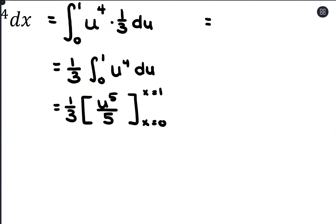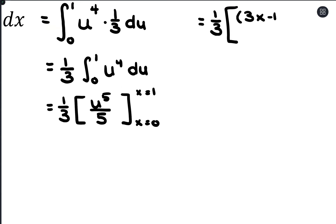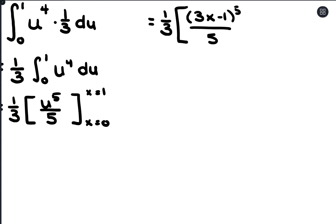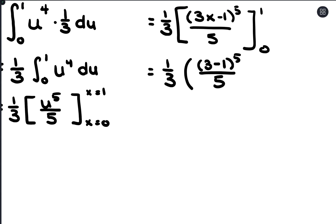So what we have here is 1/3 times, in parentheses, 3x minus 1 to the 5th power over 5, and now we're evaluating from 0 to 1 and can substitute in for x. We'll have 3 times 1 minus 1 to the 5th power over 5, subtracting 3 times 0 minus 1 to the 5th power over 5. You could simplify by hand here, but it's really just about getting a single value out. If you want to jump to the calculator at this point, that's completely fine.